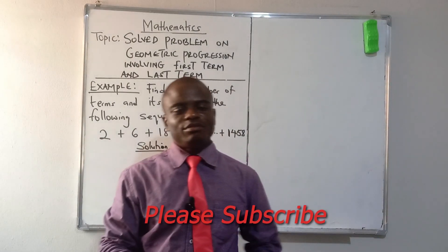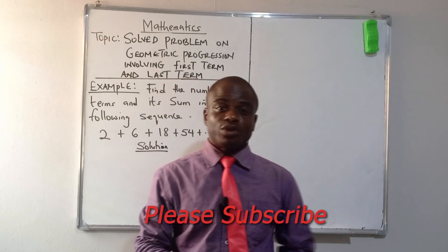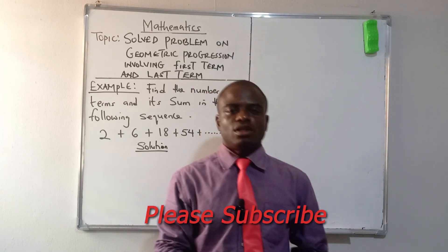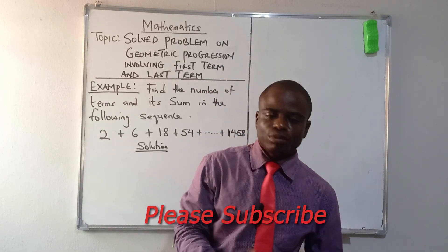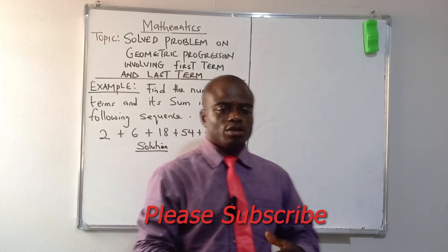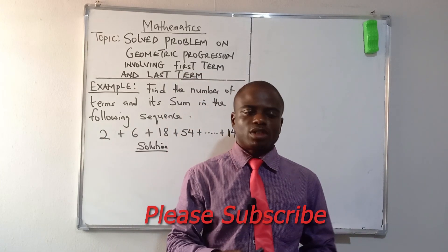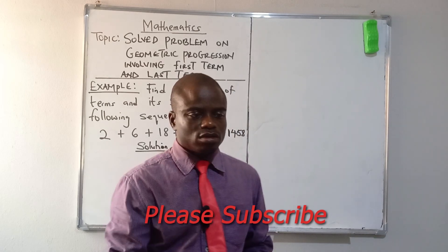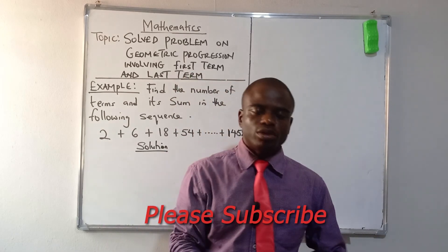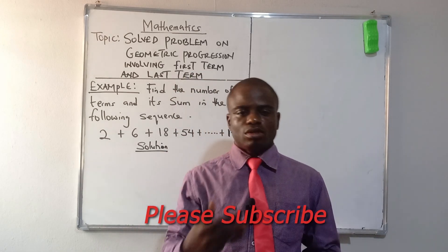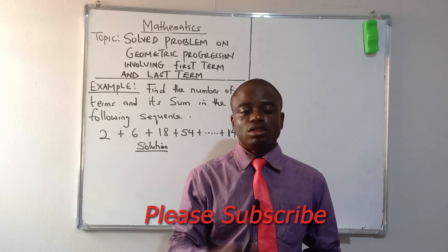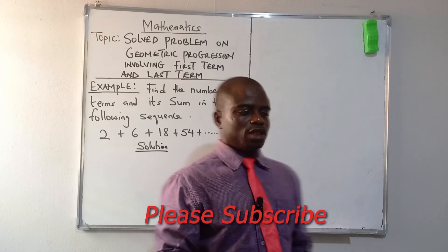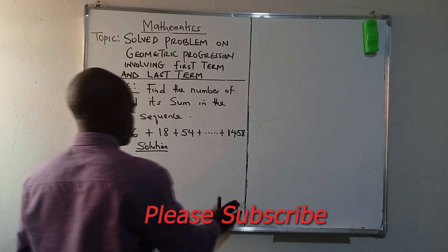Good day students, today we want to solve a problem under geometric progression involving the first term and the last term. When we are solving problems under arithmetic progression we talk about the common difference by subtracting the first term from the second term. When we are talking on geometric progression we mention, we talk about common ratio that involves division. We divide the second term by the first term. Let's see what we are saying.